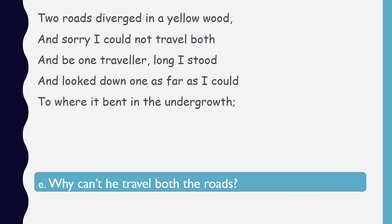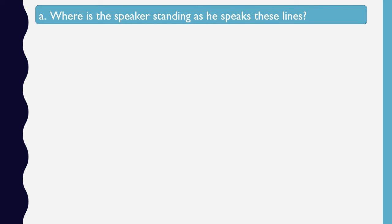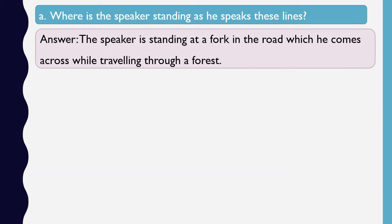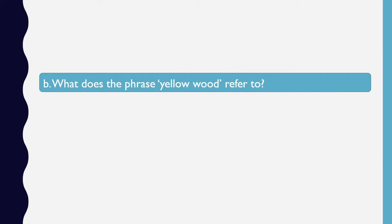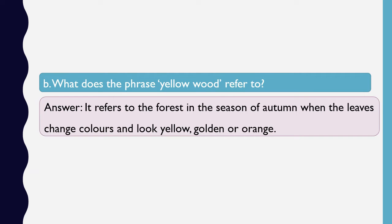Now let's look at the answers. Where is the speaker standing as he speaks these lines? The speaker is standing at a fork in the road which he comes across while travelling through a forest. You might have chosen a different set of words — as long as whatever your interpretation of the poem is backed by examples from the poem, it is acceptable. What does the phrase 'yellow wood' refer to? It refers to the forest in the season of autumn when the leaves change colours and look yellow, golden or orange.